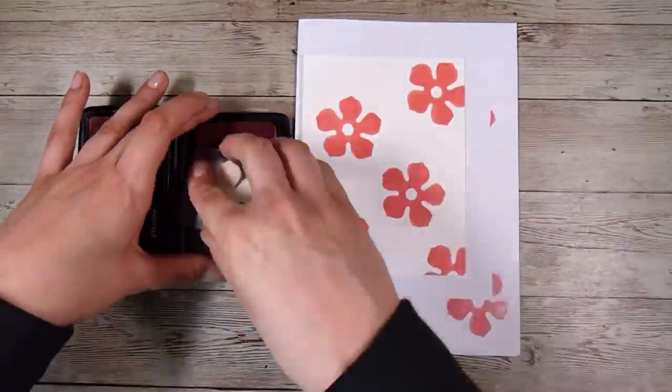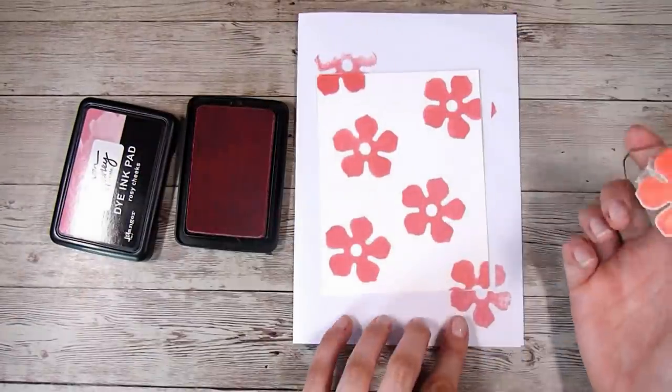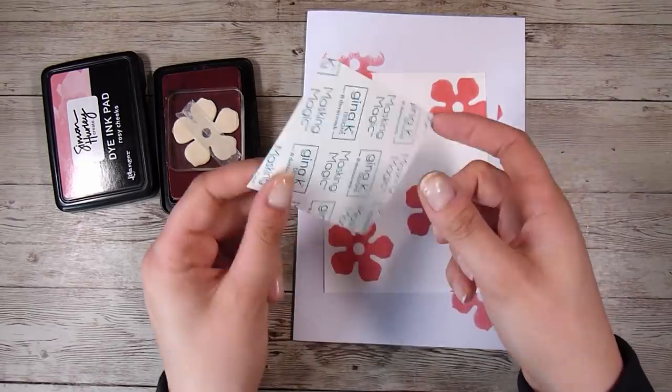I'm going to dip it into the ink pad and then just cover the front of my card panel here. Now this is a four and a quarter by five and a half inch card panel. And I think somewhere during this process, I end up cutting this down to four by five and a quarter.